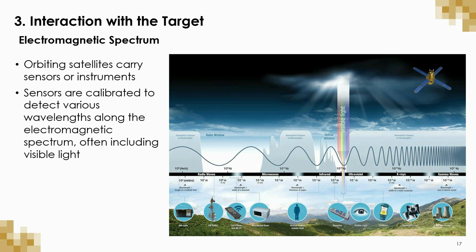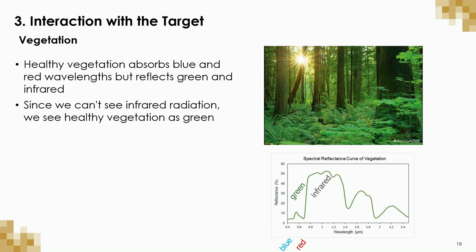So now we will look at how different objects actually interact with light. The reason that objects appear to be different colors is that they interact with various wavelengths of light differently. Vegetation and plants absorb blue and red wavelengths of light, but will reflect green and infrared light away for a viewer to see. Because our eyes cannot see infrared light, we see vegetation as green. A satellite sensor can see and record this infrared light, though. The graph at the bottom right shows the reflectance spikes at the green and infrared wavelengths.